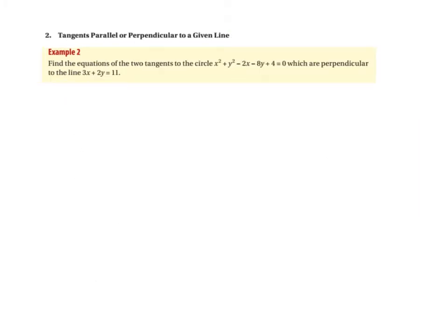The next topic is a tangent parallel or perpendicular to a given line. Find the equations of the two tangents to the circle x² + y² - 2x - 8y + 4 = 0 which are perpendicular to the line 3x + 2y = 11. I've rearranged to 3x + 2y - 11 = 0 to get the form ax + by + c = 0.